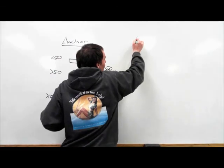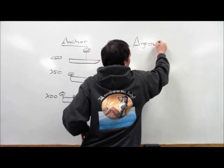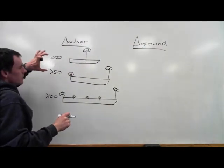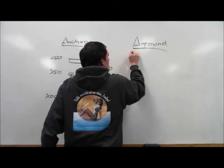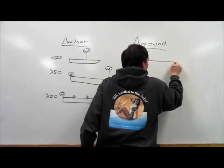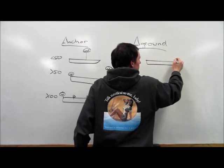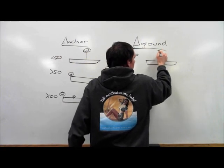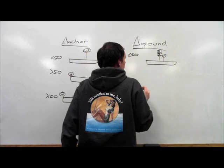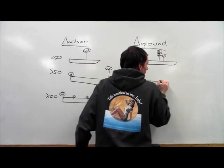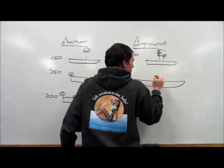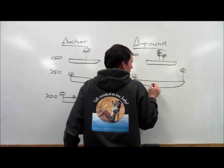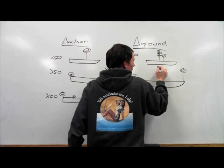Aground. Let's look at aground. Now we're talking only less than 50, more than 50. So, less than 50 aground. What do we have? One all around, and then a red over red. Good. And over 50 aground. Two whites. High white. Two white. And then red over red. Good.